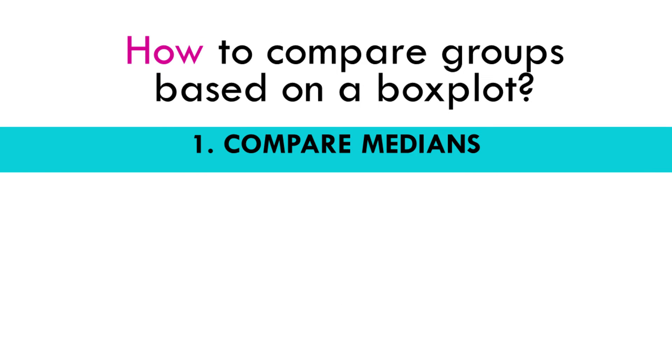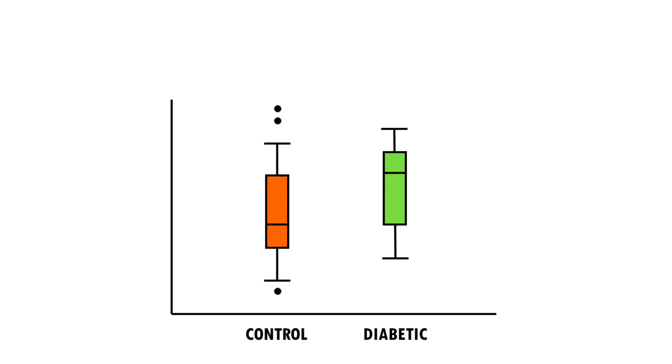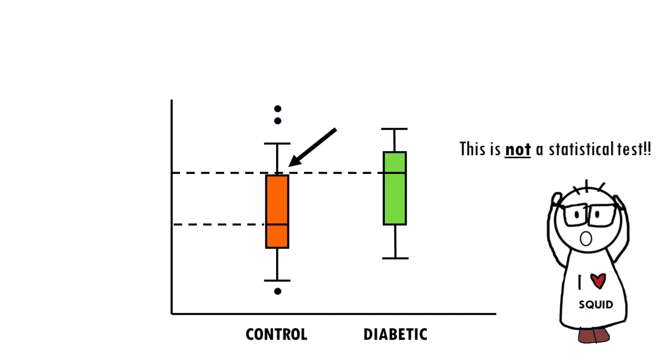So step one, the first thing we should check is the median, which is a good way to compare both groups. If the median line of the box plot lies outside of the box of the comparison box plot, then there is likely to be a difference between the two groups. The median weight is higher for diabetic mice in this case. Note that to be able to say that it's significantly higher, we would have to use a statistical test. This is just a way to visualize the data. We're not doing any statistical test.